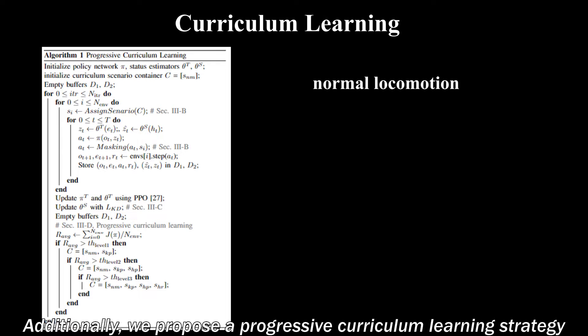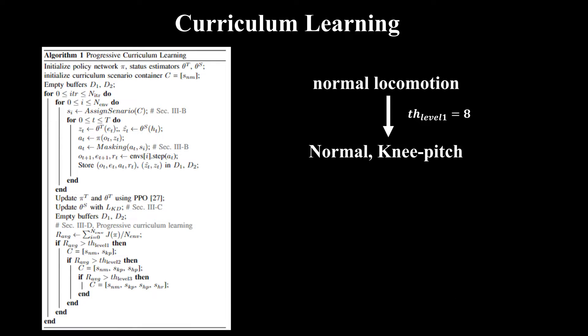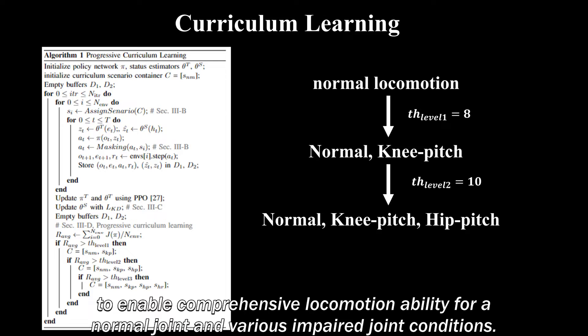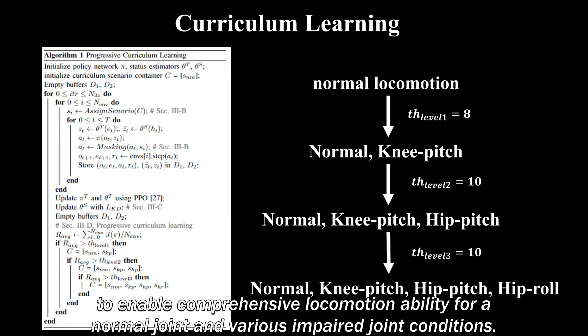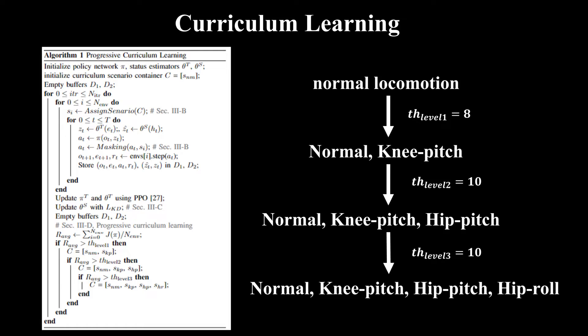Additionally, we proposed a progressive curriculum learning strategy to enable comprehensive locomotion ability for abnormal joint and various impaired joint conditions.